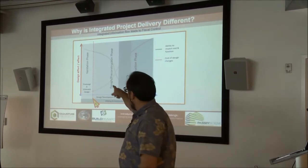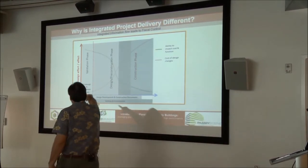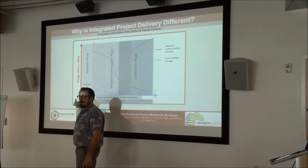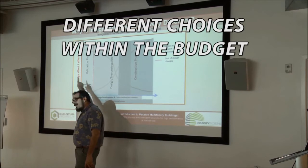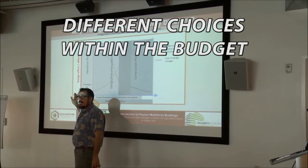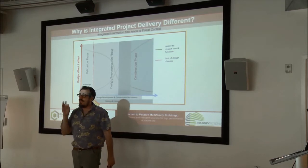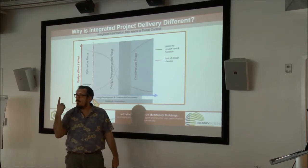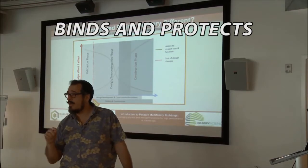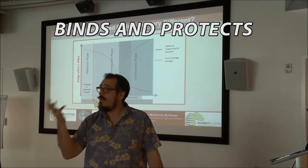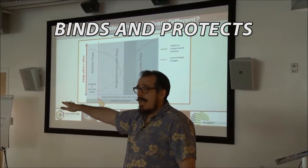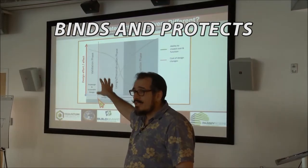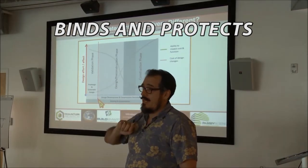For example, when I'm in the validation phase, I might be considering three different structural systems. Do I need to know which one is going to work into the final design? No. But I've got to know that within the different choices I have, I can work within this budget. The cool thing about a relational contract is it's one contract that binds all the parties — architects, engineers, owners, major subs. They pool their profit, and the project's objectives and their profitability are all tied together.